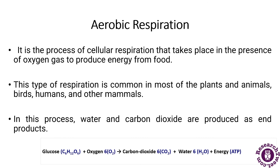During aerobic respiration in plants, oxygen enters the plant cells through the stomata — the tiny pores present on the leaf, found in the epidermis of the leaves and stem. With the help of photosynthesis, all green plants synthesize their food and release energy. The chemical equation for photosynthesis is: carbon dioxide plus water gives rise to glucose plus oxygen.